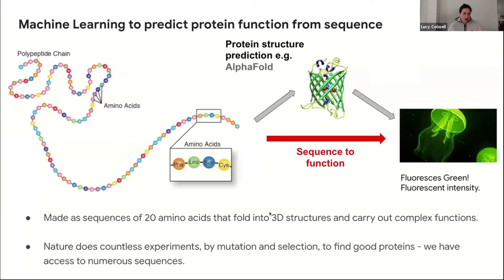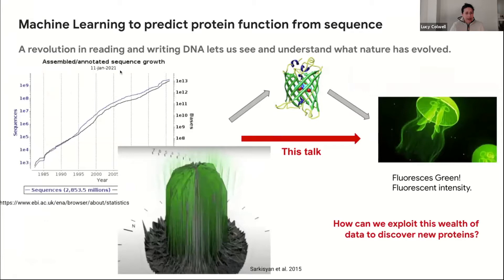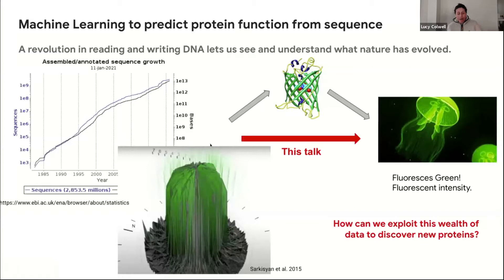We're very fortunate because nature does countless experiments using mutation and selection in order to find good proteins, so we have access to numerous sequences — lots and lots of data, which is a great spot for machine learning. There's a plot from EBI showing the growth of sequence data: something like 2.8 billion sequences as of a couple months ago, growing extremely quickly on a log scale with no sign of slowing down. In terms of measuring function, however, we're considerably behind. There are a few canonical large datasets where people have measured the function of thousands of proteins.